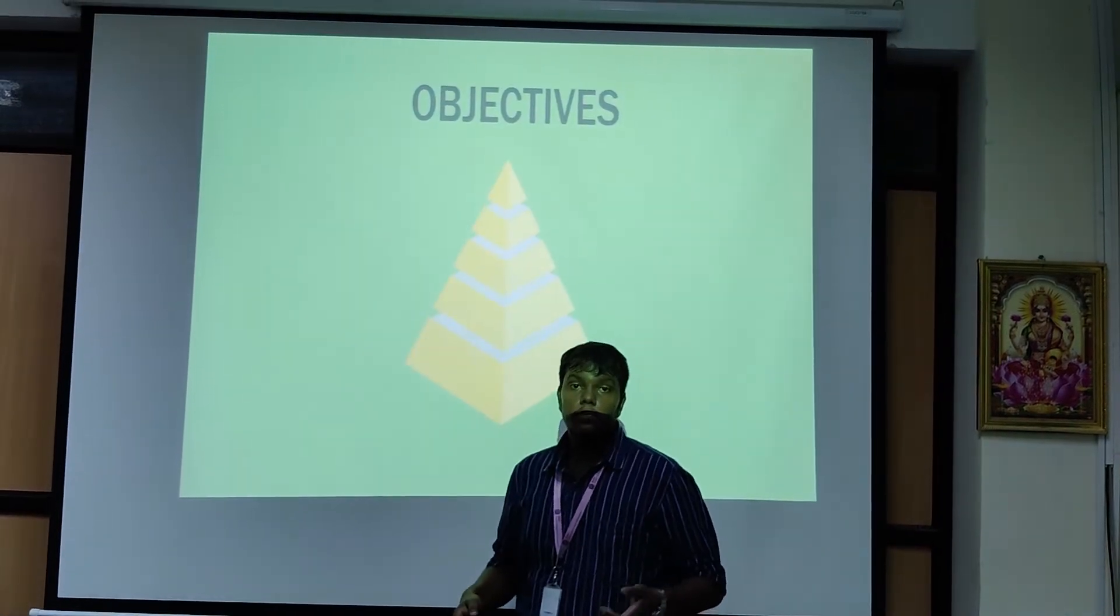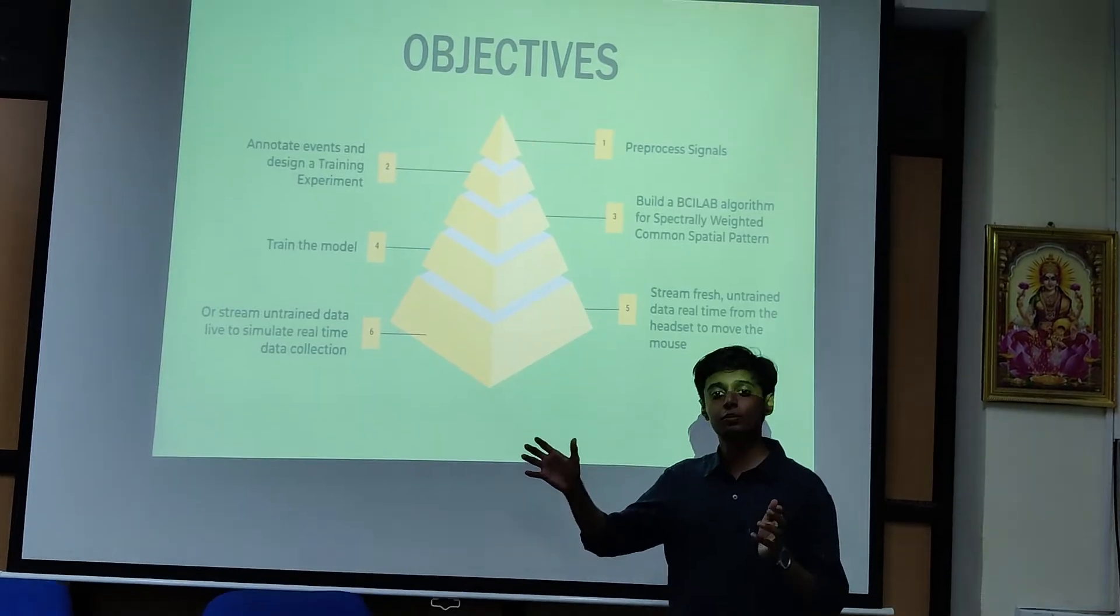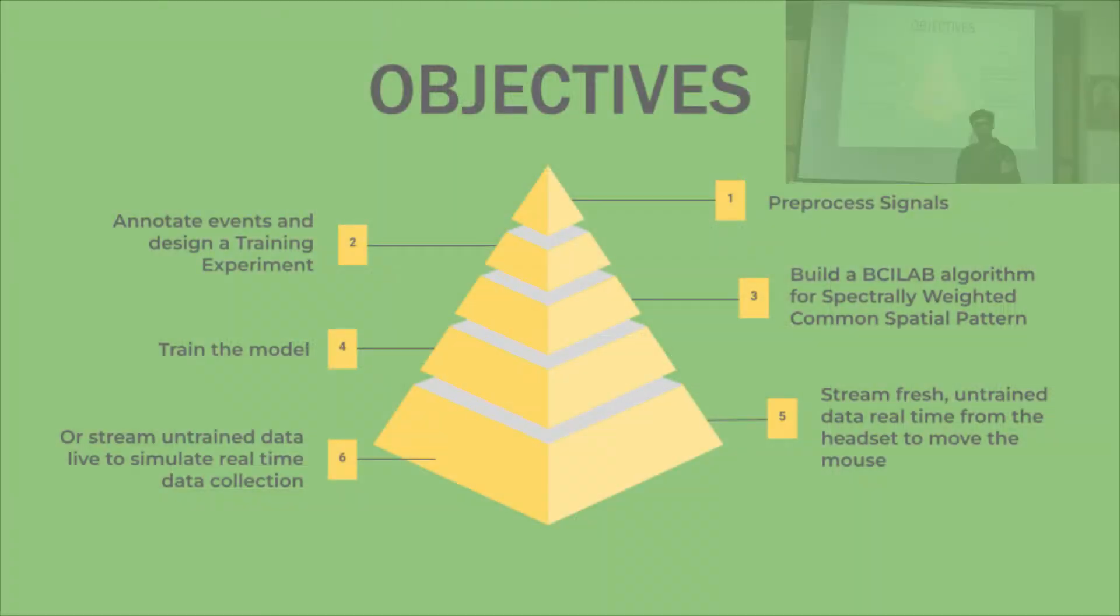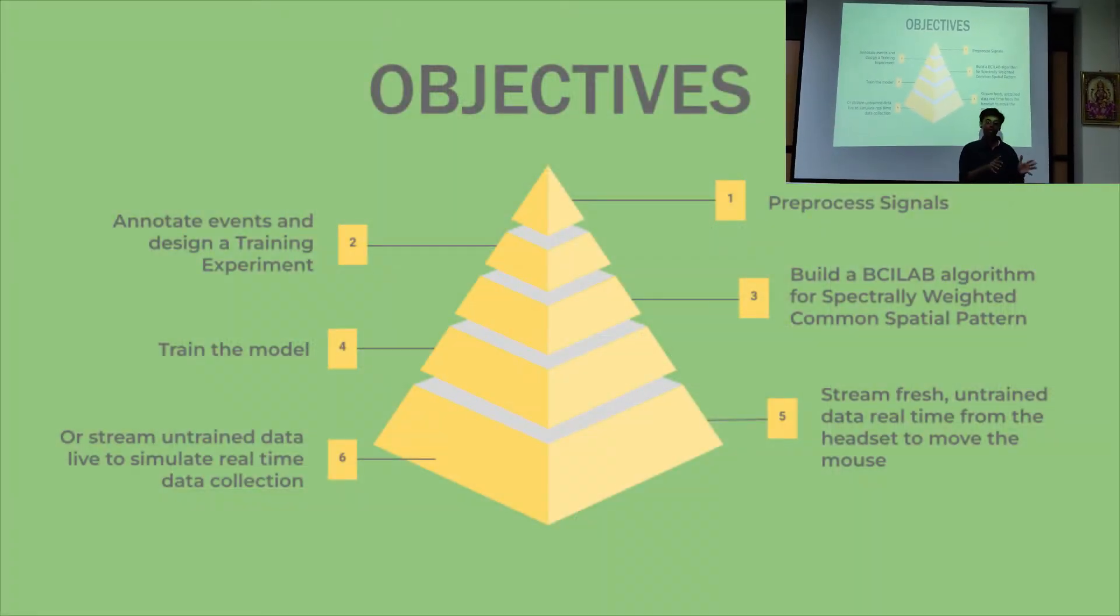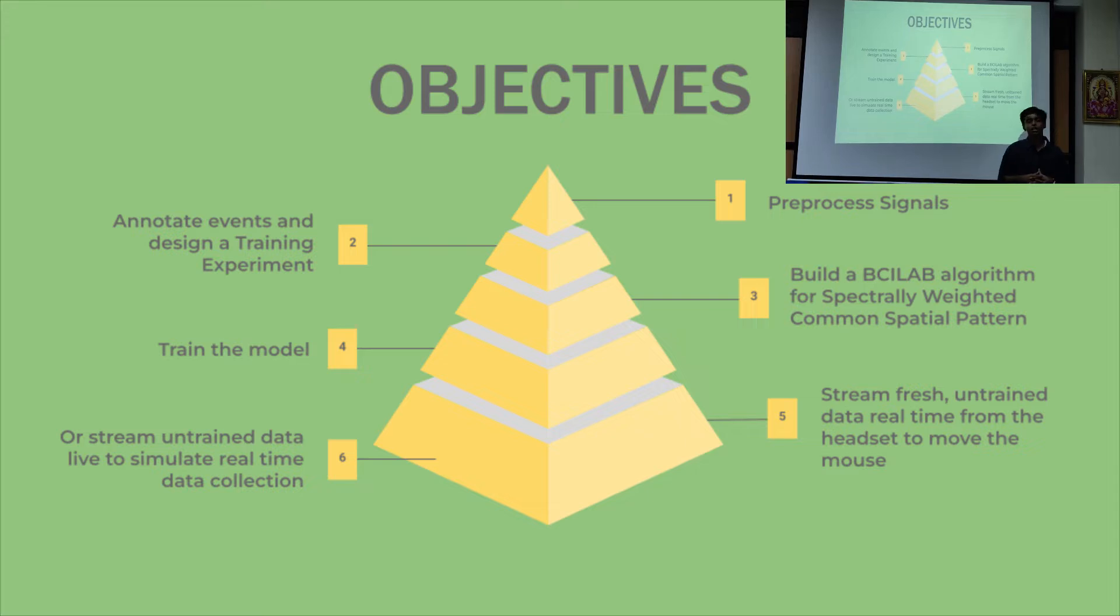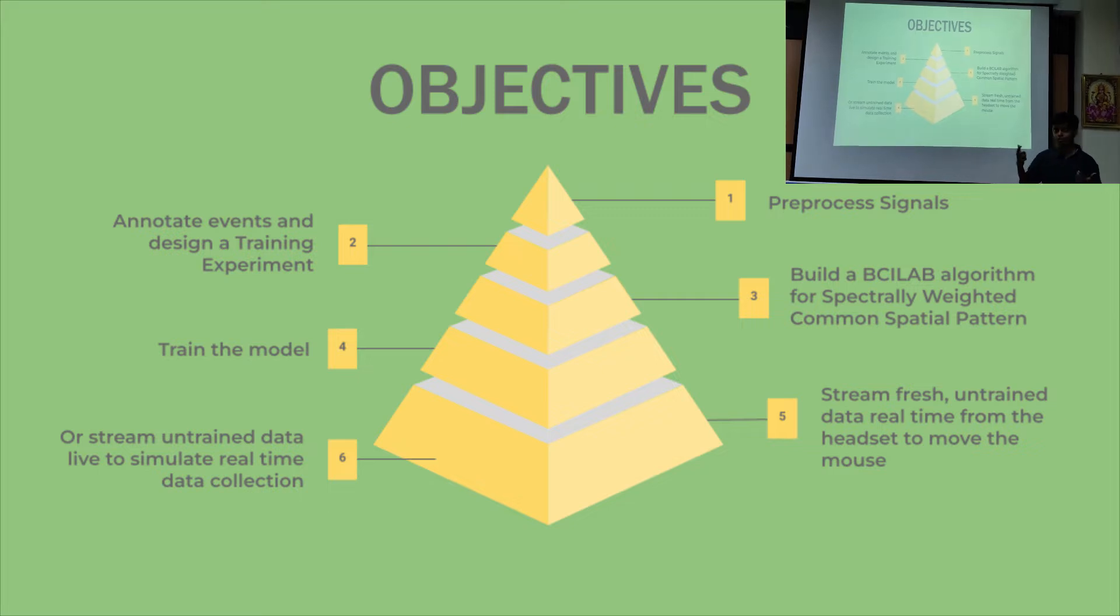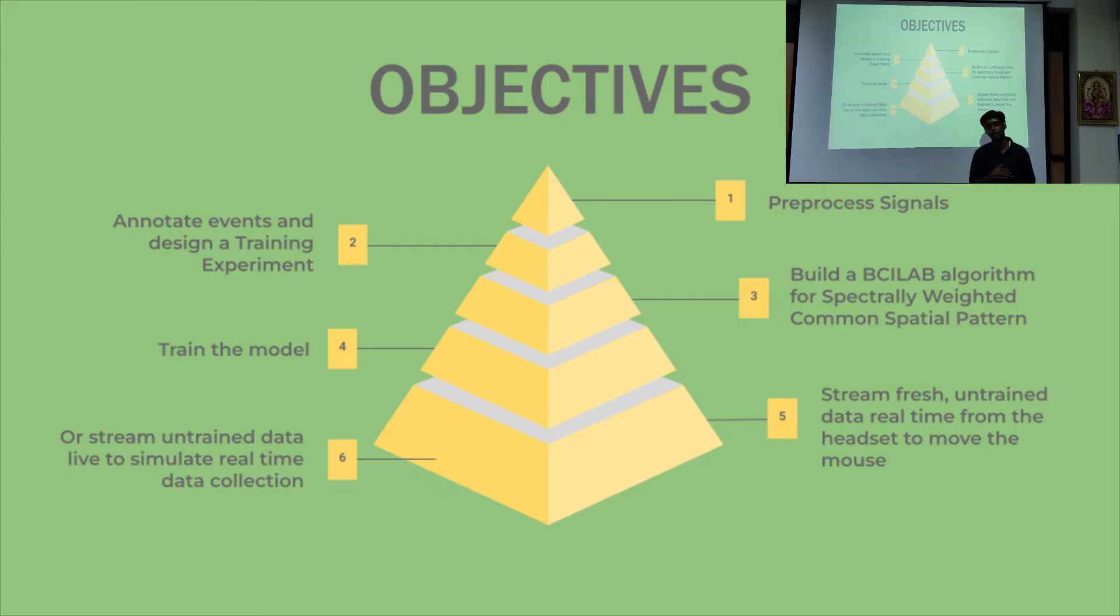Next, we have the objectives which will be continued by Varun. Since the project was considerably large and we had several small steps to finish, we segmented the objectives into five or six different parts. The first step was to preprocess the signals since we were not using any online dataset and we used the BCI headset. We need to really understand how the data worked and what preprocessing chains it required so that we could get the best classifier output.